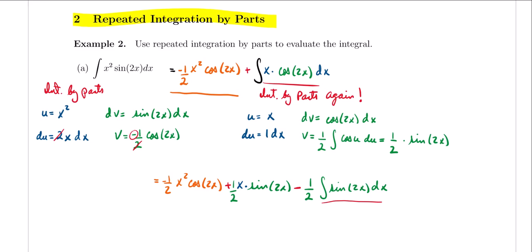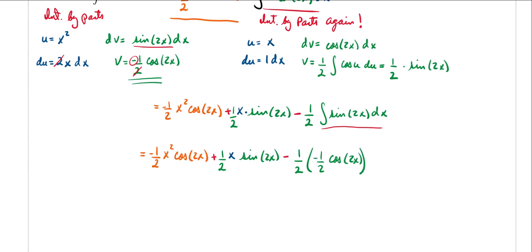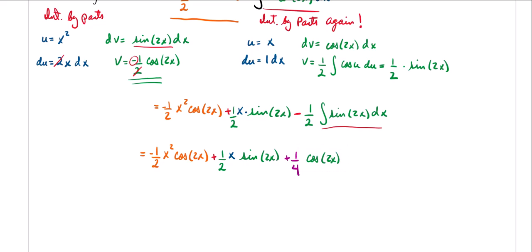The integral of sine of 2x is the same as our first dv, so we copy our result: negative one-half cosine of 2x. Our final answer is negative one-half x squared cosine of 2x, plus one-half x sine of 2x, minus one-half times negative one-half cosine of 2x. Simplifying, negative one-half times negative one-half gives positive one-fourth, so we get plus one-fourth cosine of 2x.